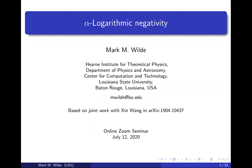So it's gotten a lot of attention. What we're doing in this work is proposing a family of logarithmic negativity measures that interpolate between the original one and another one that Xin and I introduced in a previous work. In that work, we called it kappa entanglement, but in the new work, we realized that it corresponds to the value alpha equal to infinity, and so we call it max logarithmic negativity.